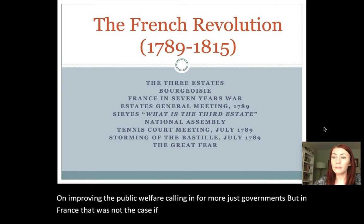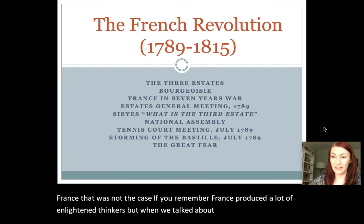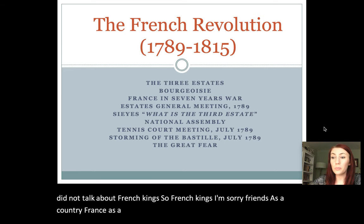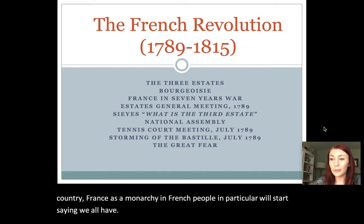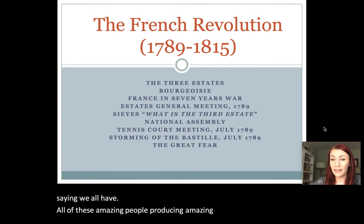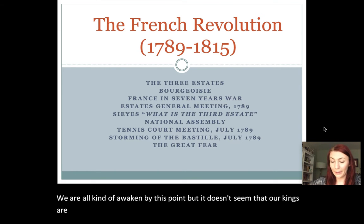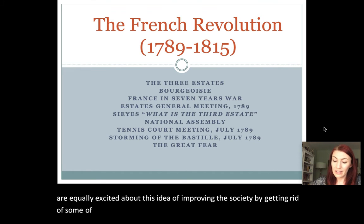The Enlightenment had this emphasis on progress, improving the public welfare, and calling for more just governments. But in France, that was not the case. France produced a lot of enlightened thinkers, but when we talked about enlightened absolutism, we did not talk about French kings. French people will start saying: we have all these amazing people producing works of the Enlightenment, we are awakened, but it doesn't seem our kings are equally excited about improving society by giving up some of their absolute powers.